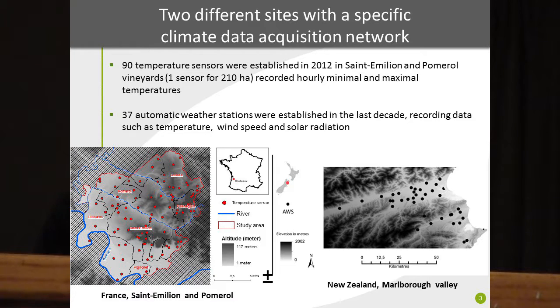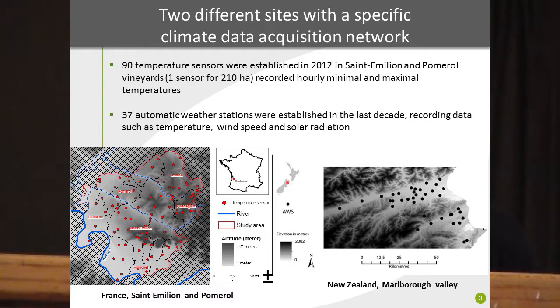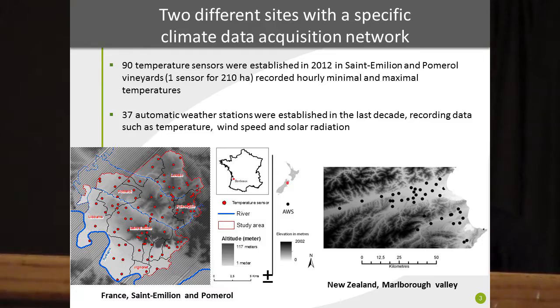On the picture on the left, you can see the site of Saint-Emilion and Pomerol. These two sites have very different specific environmental parameters. In Saint-Emilion and Pomerol, the altitude varies between 10 meters to more than 100 meters across a succession of hills and valleys, with rivers such as the Dordogne in the south that can influence local temperature. In New Zealand, there are high mountains and oceanic influence, creating a very specific and complex local climate.